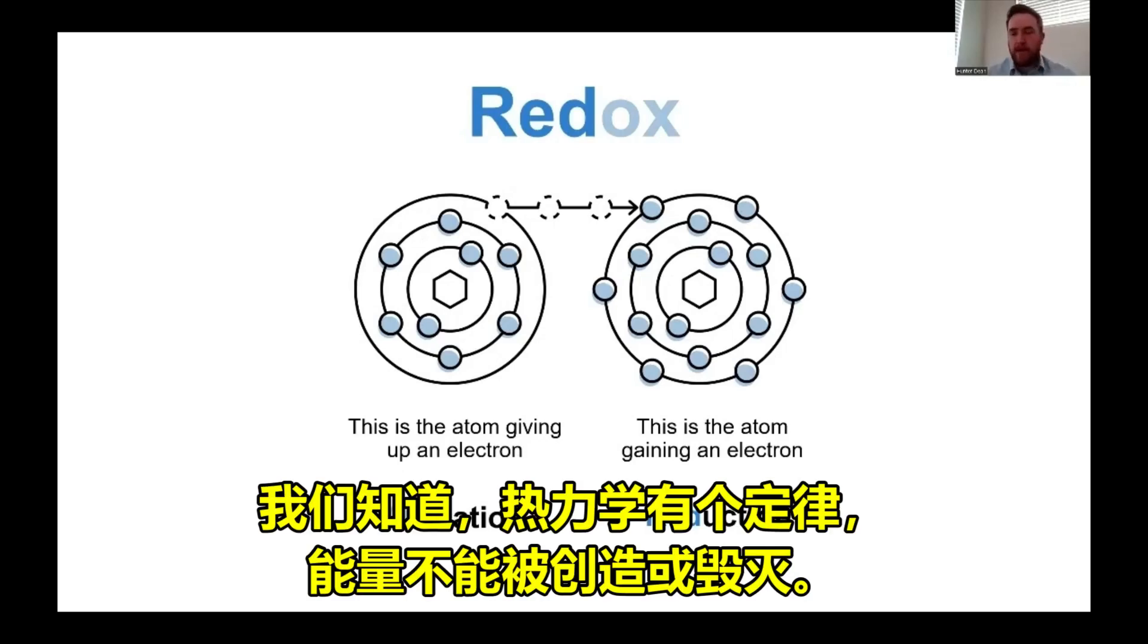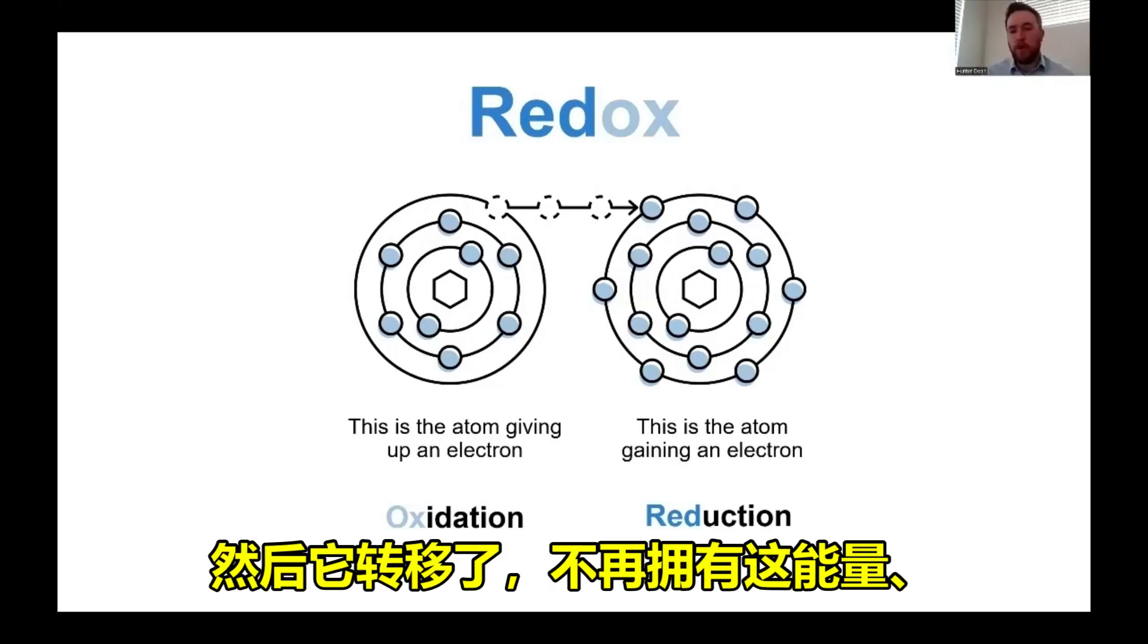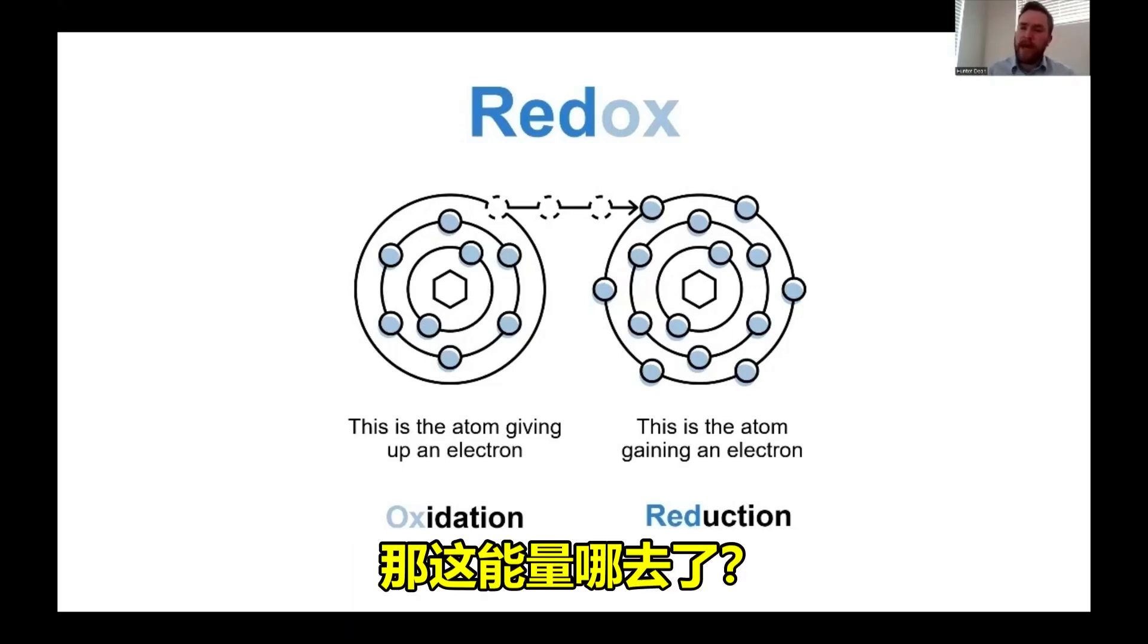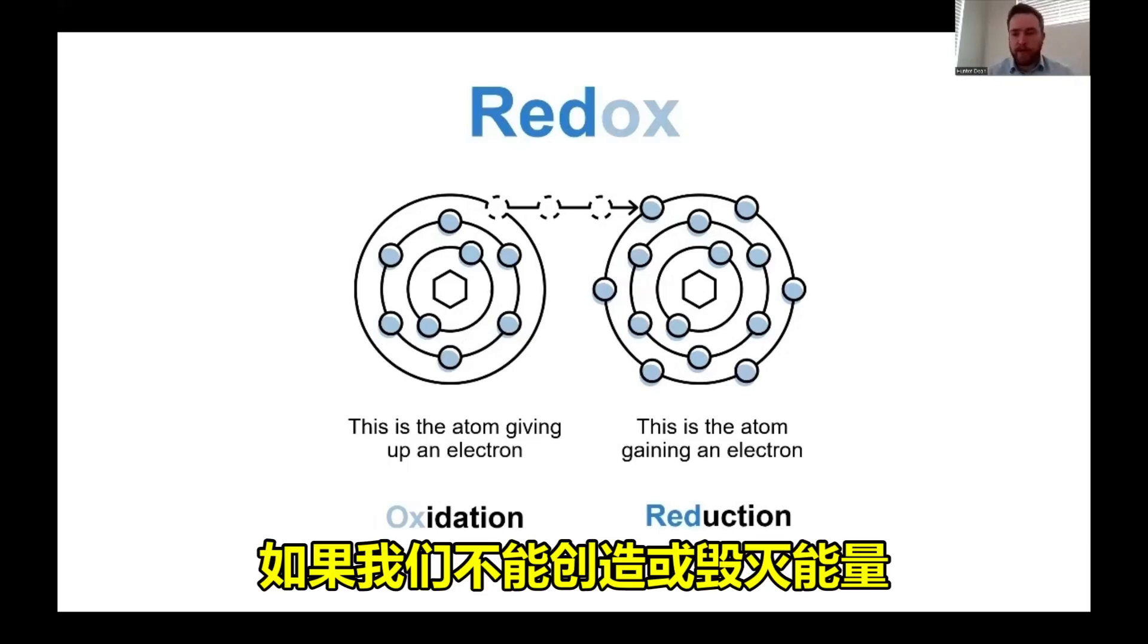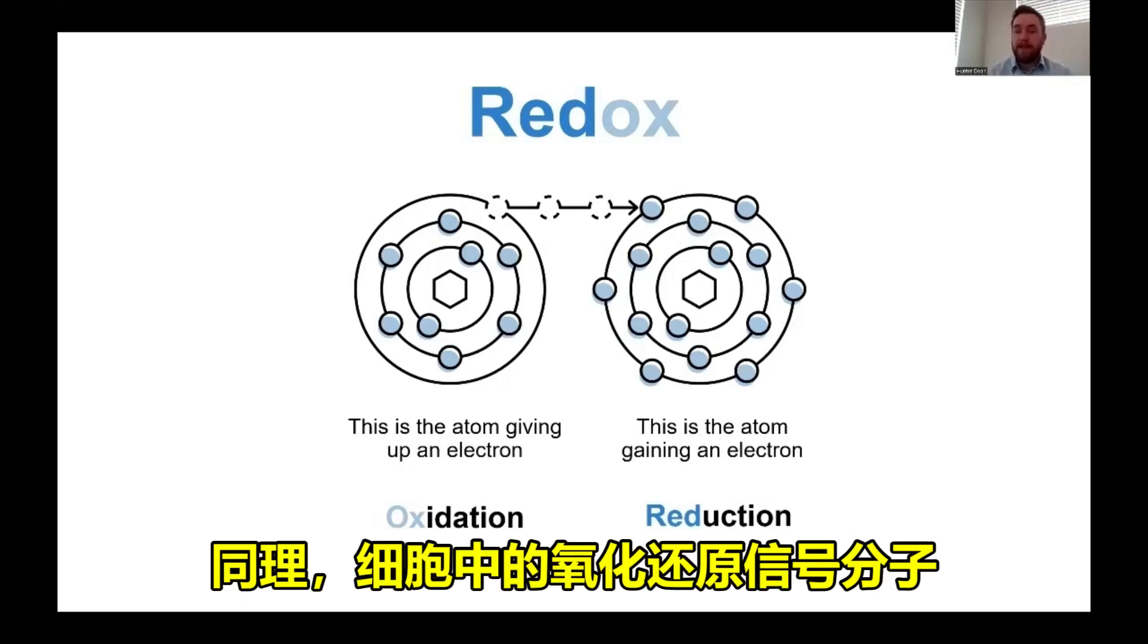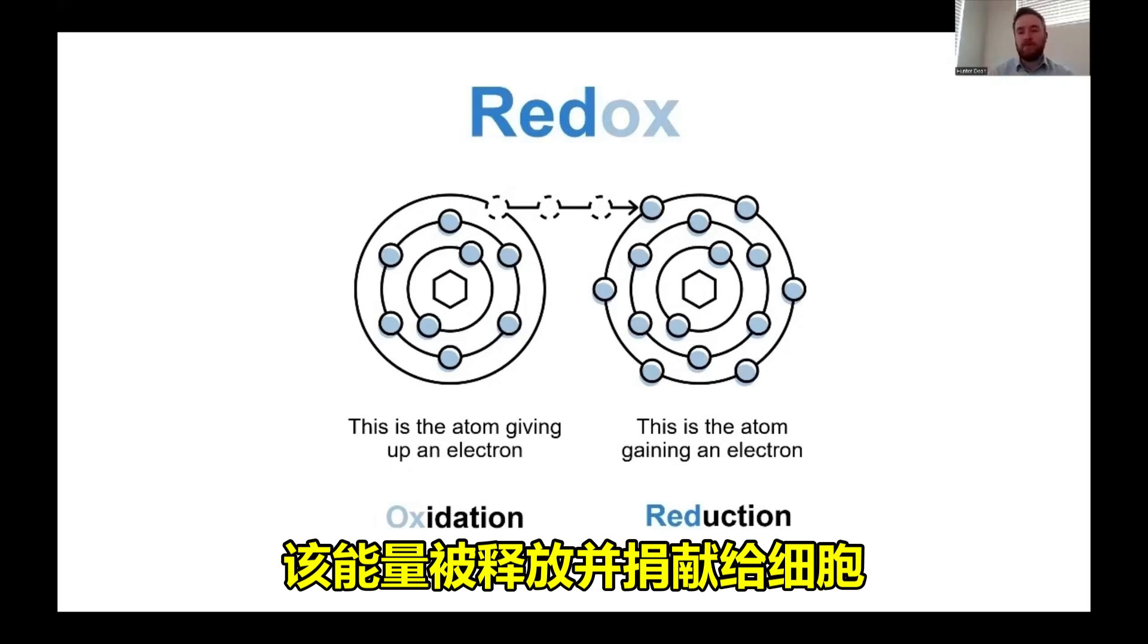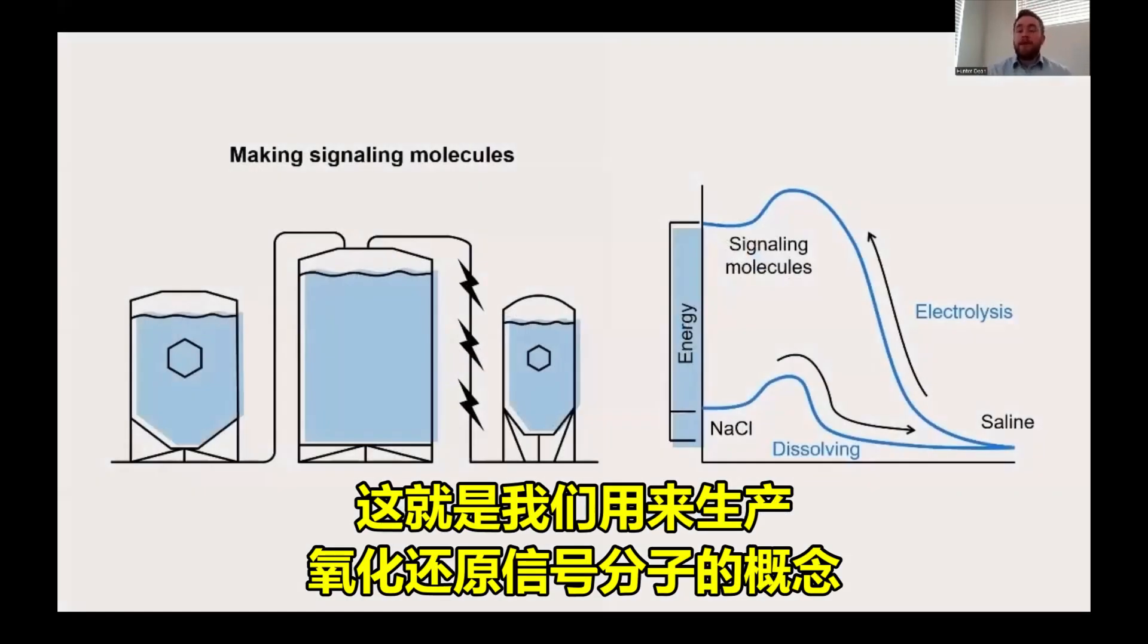Now, in thermodynamics, we know that energy cannot be created or destroyed. And so if the electron possesses energy before it transfers, and then it transfers and no longer possesses that energy, what happens to that energy? If we cannot create or destroy energy, that means that energy must have been released or transferred to its surroundings. In the case of redox signaling molecules in the cell, if this molecule has been absorbed by the cell, that electron transfers, that energy is released and donated to the cell.